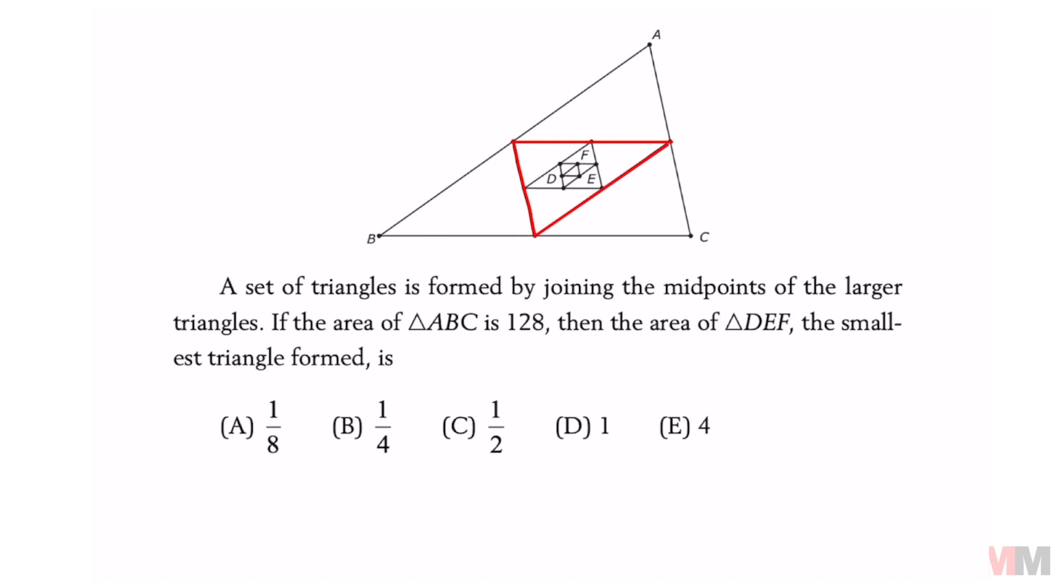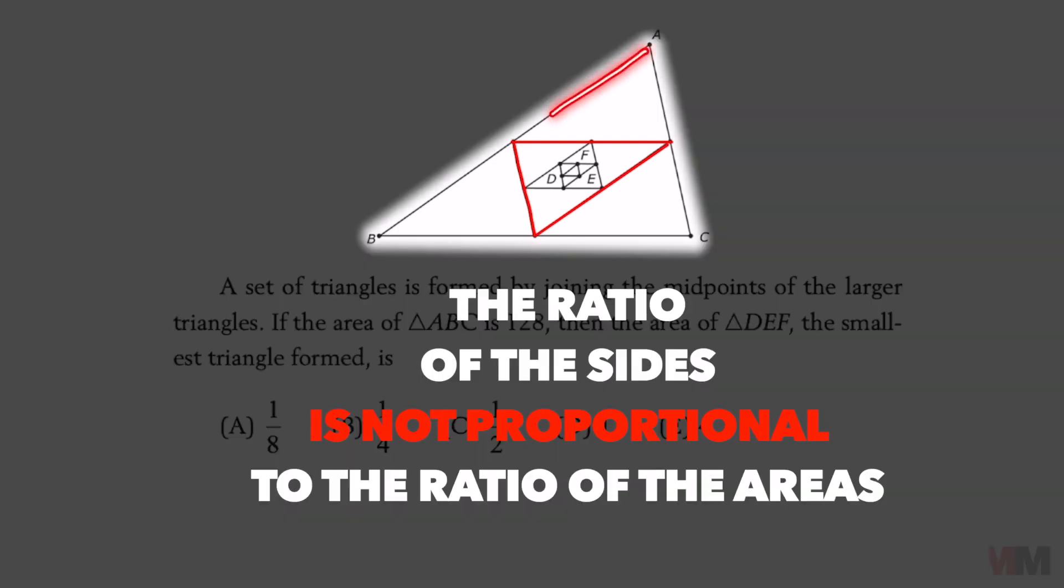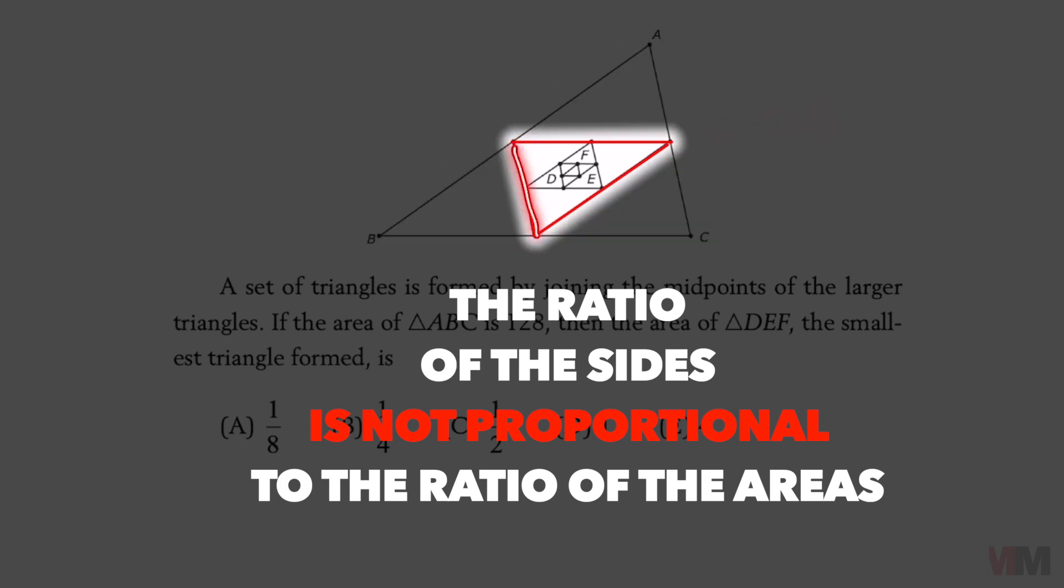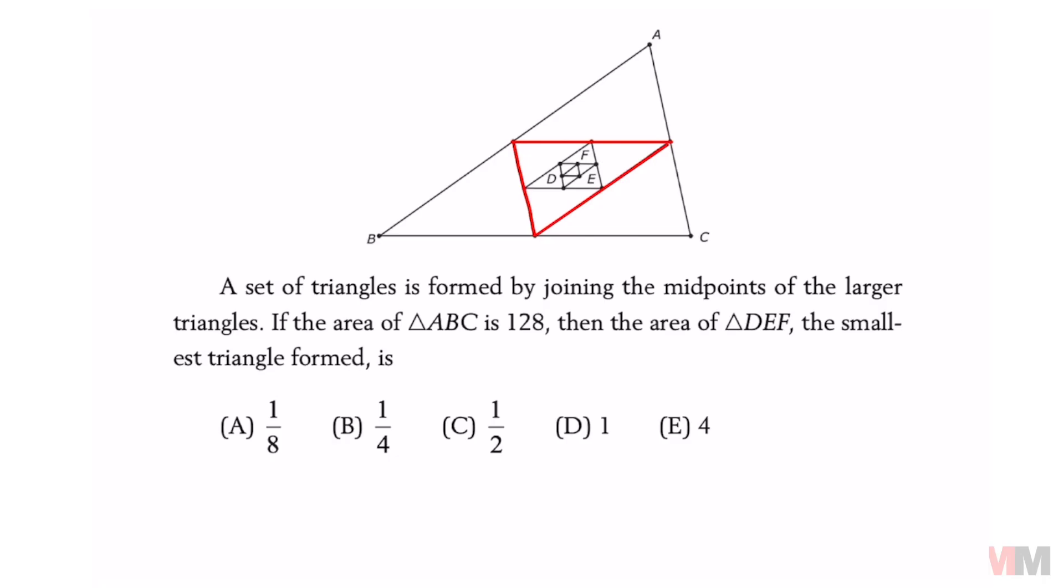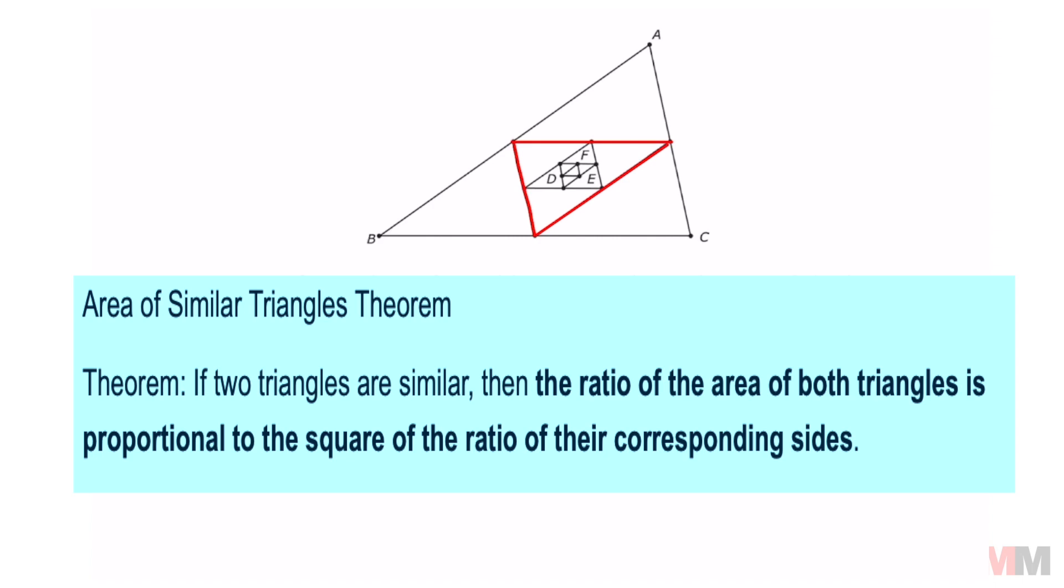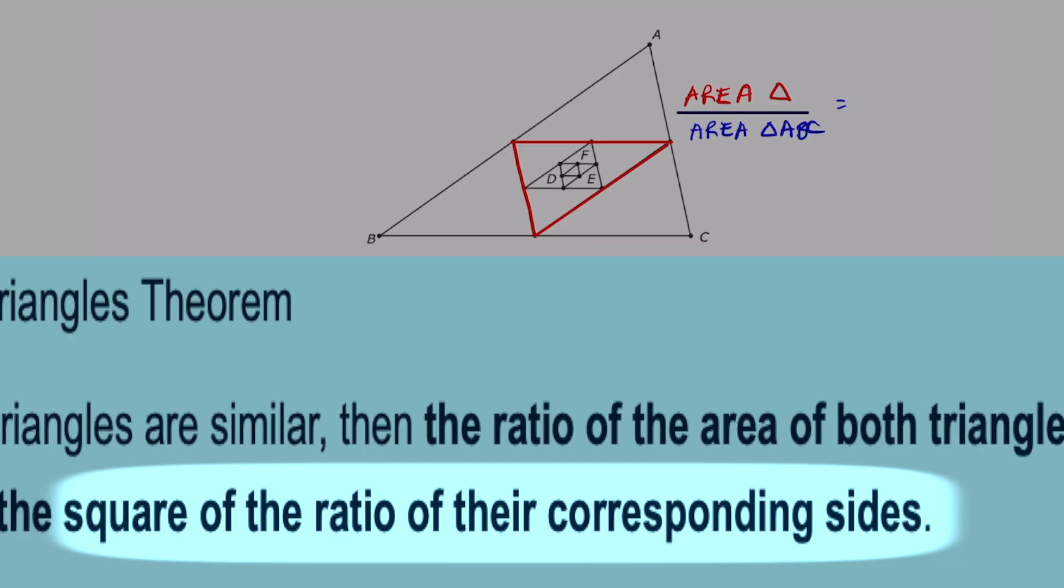Biggest mistake that people make here is that they see triangle ABC. They know that the area of that is 128, but that doesn't mean that the red triangle's area is going to be one half. There's a second thing that you got to know, and that is that if two triangles are similar, then the ratio of their areas is going to be proportional to the square of the ratio of their corresponding sides.